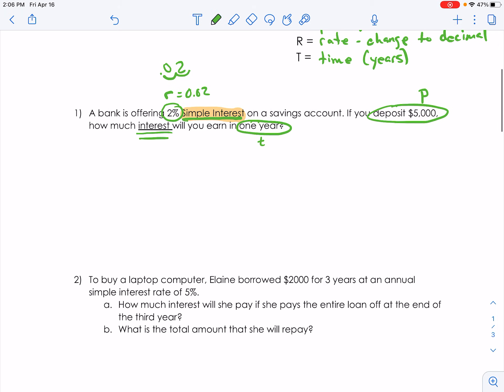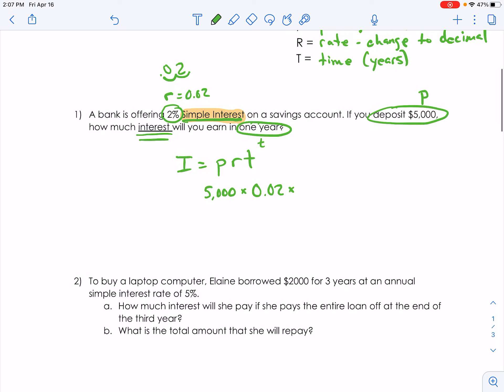So I'm trying to find the simple interest. I'm going to use my simple interest formula, I equals P times R times T. P is 5,000, so we have 5,000 times the rate as a decimal is 0.02 times the years, we're just looking for one year, so one. And that's going to get us the amount of interest that we would earn.